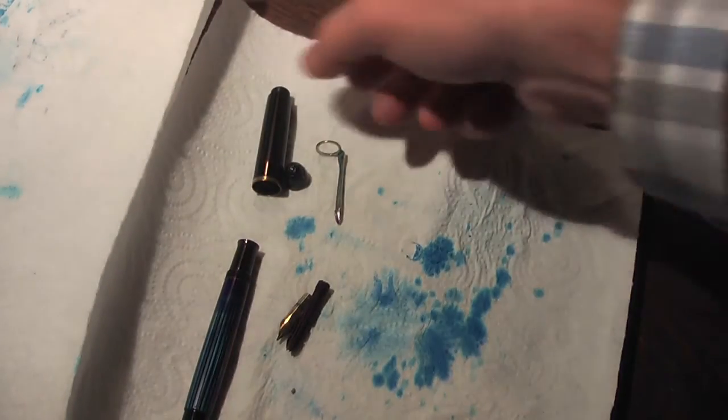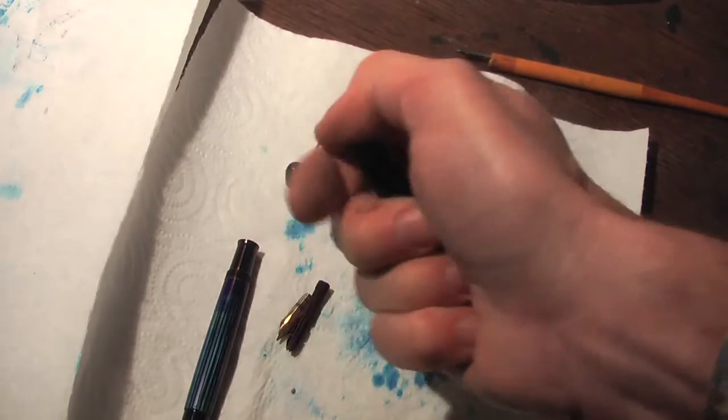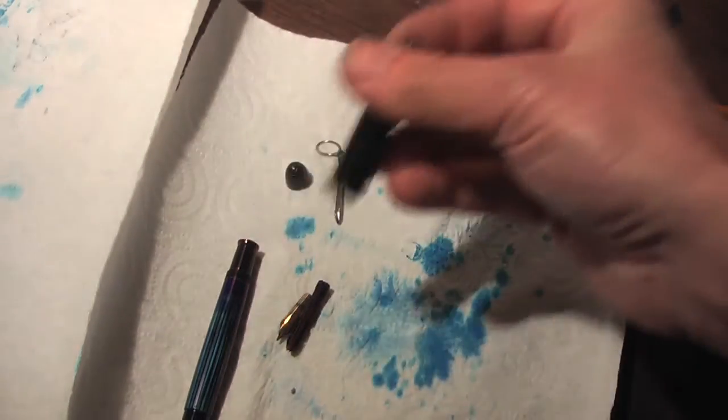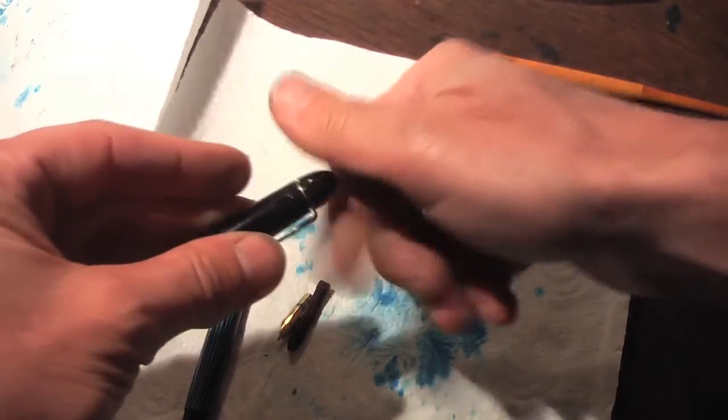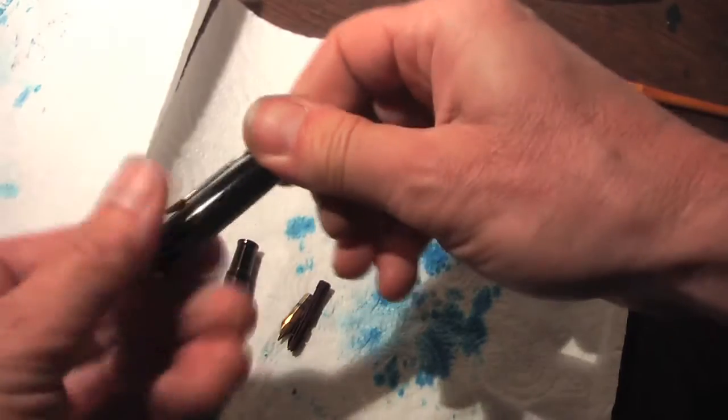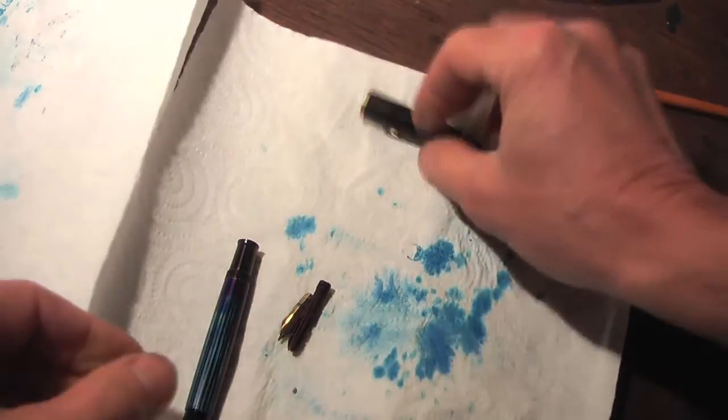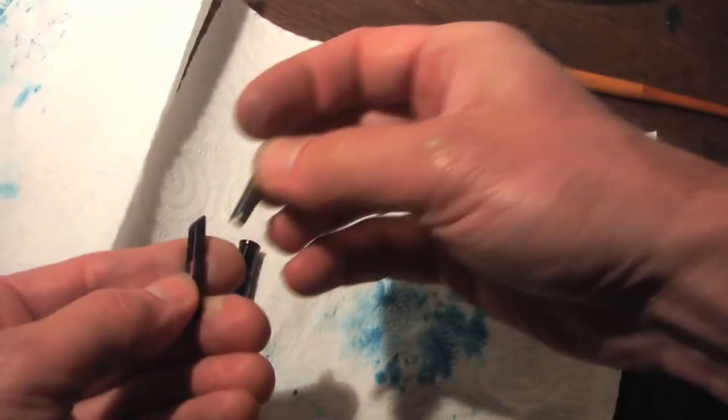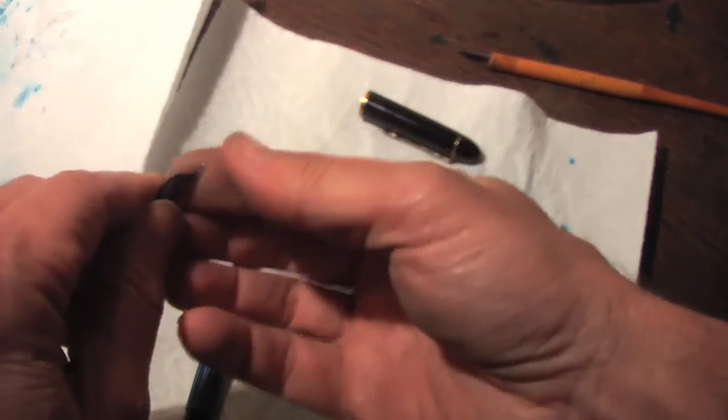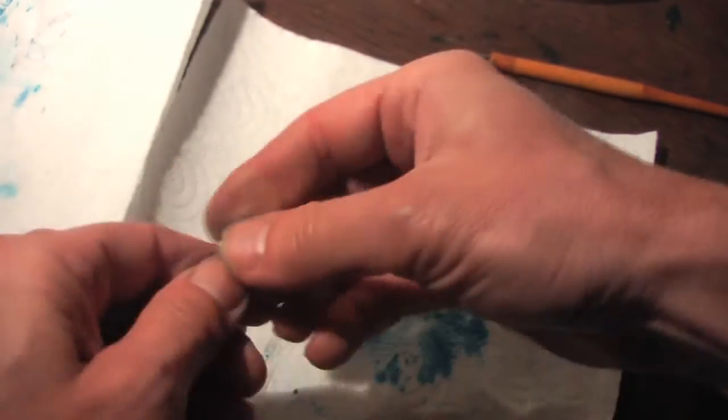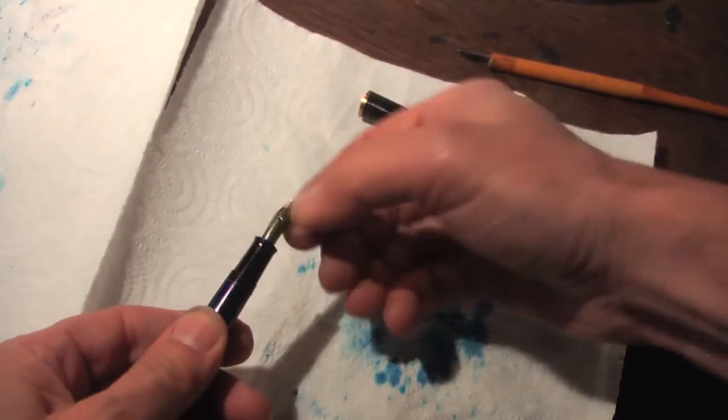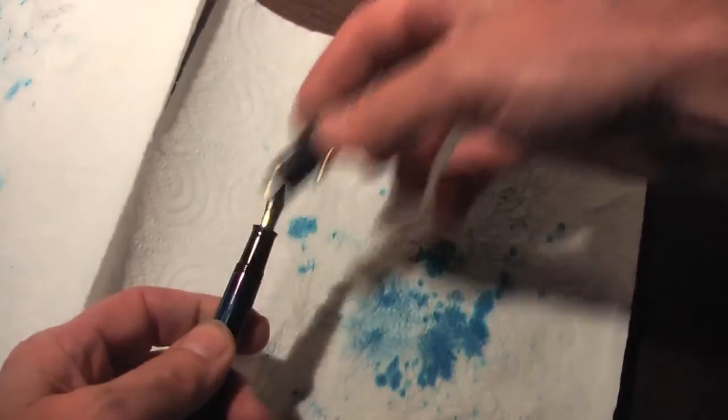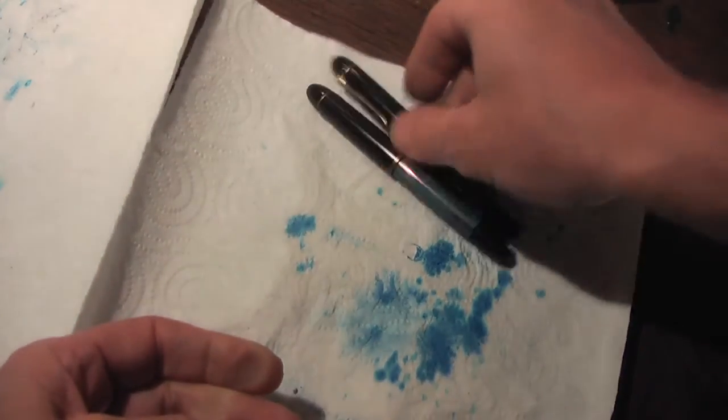The second pen - the cap is slightly different. This one doesn't have the insert, you just put the clip onto it and fasten the knob. Again in this case we have the separate ink feed and nib. Just put the nib onto the ink feed and push it back again into the fountain pen. Number two.